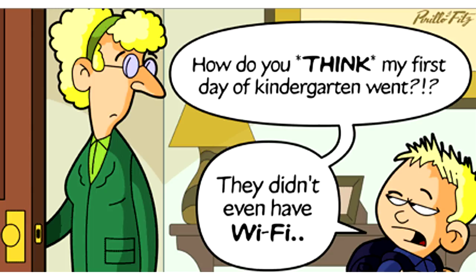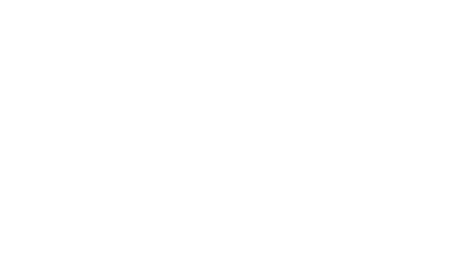Before the time when the internet was just one way, information only traveled from one place and was only received on the other end, meaning there couldn't be any physical interaction between two points. When Web 2.0 rose, the internet became the most used thing as a databank of information.